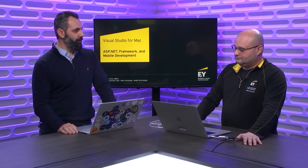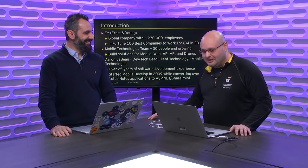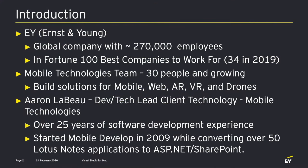Today we have Aaron from Ernst & Young. He's here to talk about all the amazing things they're building. I'm from Ernst & Young — also called EY. It's a very large company, 270,000-plus people, and we build very complicated enterprise solutions globally. I'm on the mobile technologies team. We build solutions — mobile technologies isn't just mobile: we build web solutions, AR and VR, we're the team that leads the drone initiative at EY, and we also do HoloLens. We use Visual Studio for Mac for just about almost everything we build, which is a really neat thing. I think of Visual Studio for Mac around three main pillars of software development.